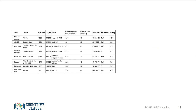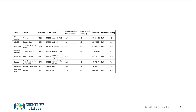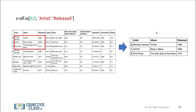You can also slice data frames and assign the values to a new data frame. We assign the first two rows and the first three columns to the variable z. You can also slice data frames using column names, assigning the first three rows and all columns between the columns named artist and released. The result is a new data frame z with the corresponding values.